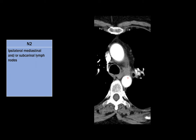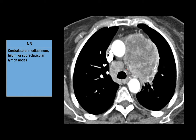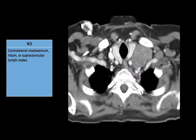In this case, we have a lymph node that straddles the AP window and left paratracheal region, in the region of the recurrent laryngeal nerve. This patient presented with a left vocal cord hemiparesis. Here's an example of an N3 node — a large tumor in the left upper lobe that invades the mediastinum, with a right paratracheal lymph node. Here's a patient with a left lung cancer and an enlarged left supraclavicular lymph node. Remember that supraclavicular lymph nodes, whether ipsilateral or contralateral, are classified as N3.